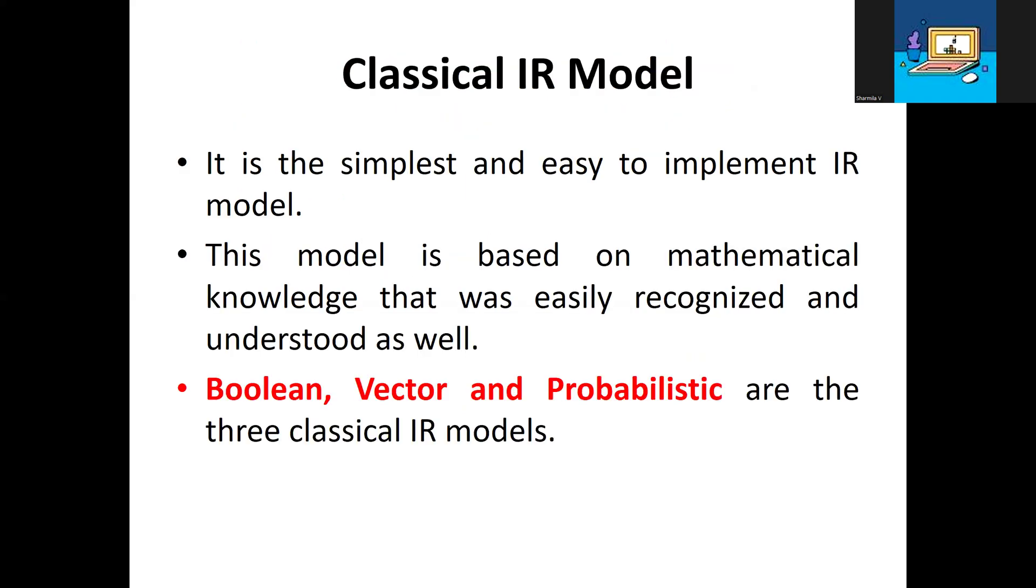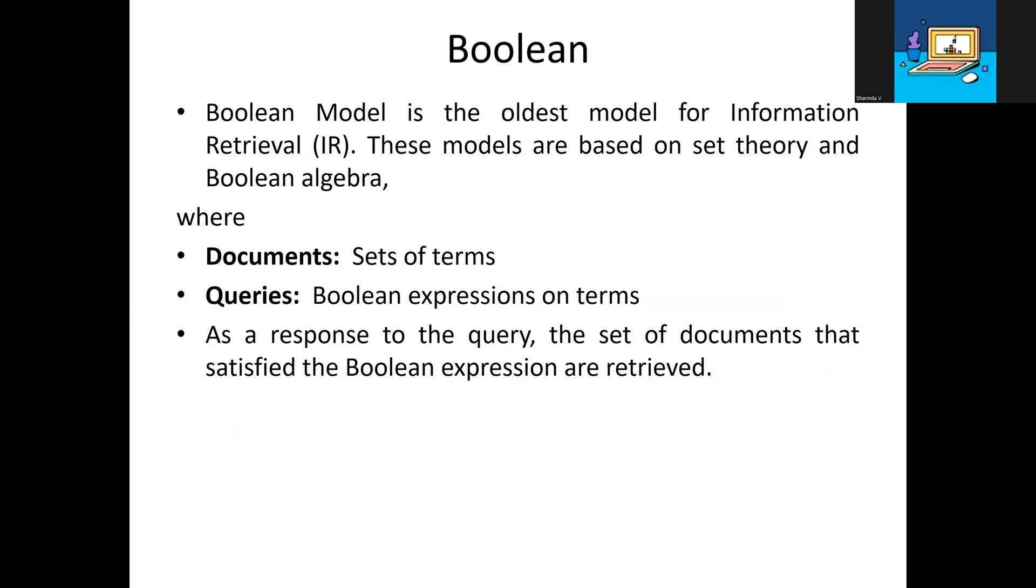The classical IR model is the simplest and easiest to implement. It is based on mathematical knowledge that is easily recognized and understood. Examples include the Boolean model, vector model, and probabilistic model. These are the three main examples of classical IR models.